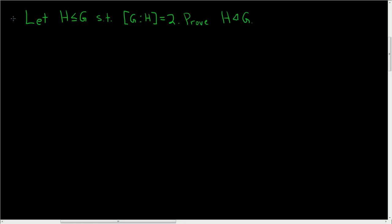Let H be a subgroup of G such that the index of H and G is 2, and we have to prove that H is a normal subgroup of G.